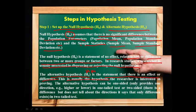The alternate hypothesis is usually the hypothesis the researcher is interested in proving. The alternate hypothesis can be one-sided, providing only one direction — that is, higher or lower — in a one-tailed test, representing a positive or negative direction. Or it can be two-sided in a two-tailed test, where it does not indicate direction but only states that a difference exists.